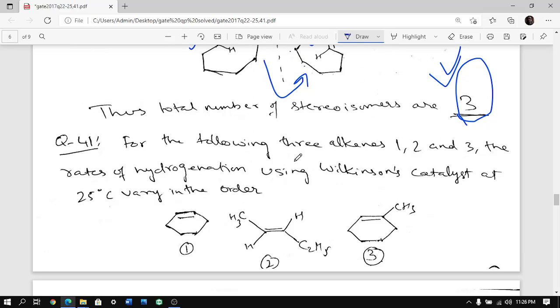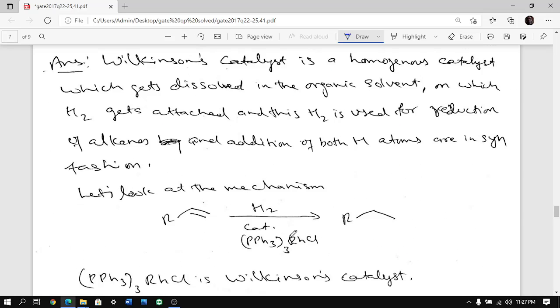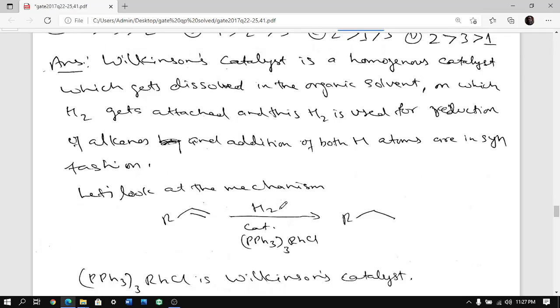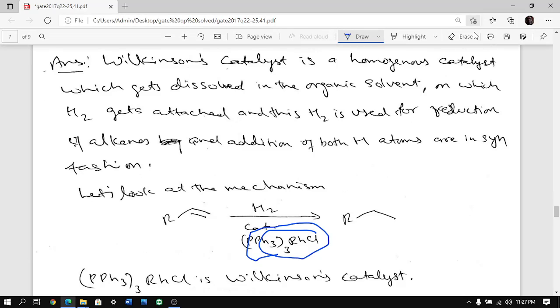Last question. In the following three alkenes 1, 2 and 3, the rate of hydrogenation using Wilkinson's catalyst at 25 degrees Celsius varies in the order. You see this molecule 1 and 3 are very similar, only one methyl is there. So it is extra substituted and this is cis alkene and this is trans alkene.